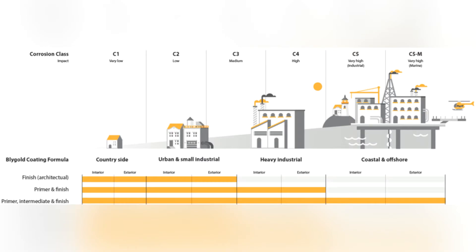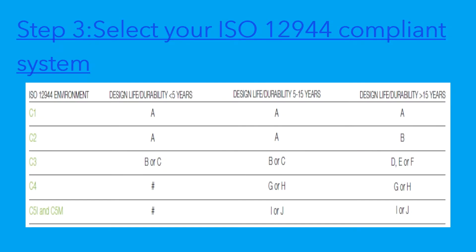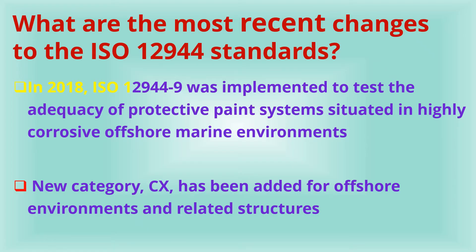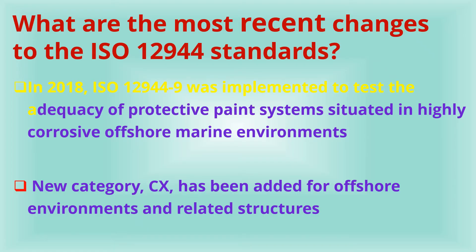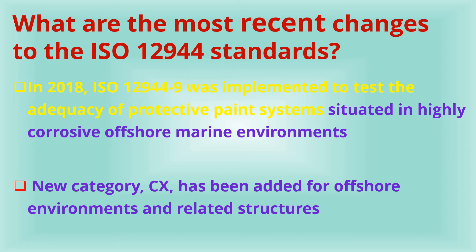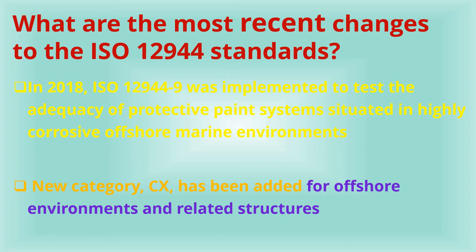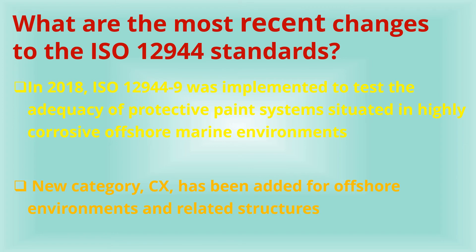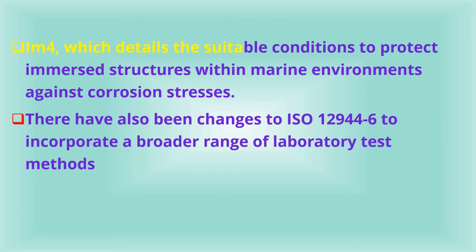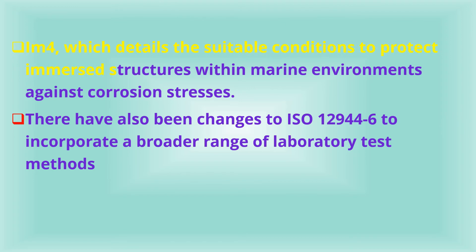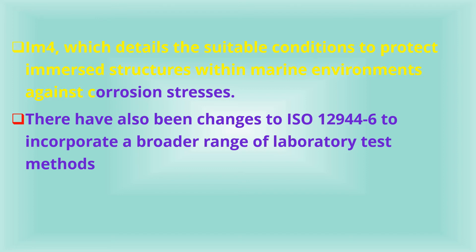Step 3: select your ISO 12944 compliant system. What are the most recent changes to the ISO 12944 standard? In 2018, ISO 12944-9 was implemented to test the adequacy of protective paint systems situated in highly corrosive offshore marine environments and related structures. Accordingly, a series of changes have been made to the corrosivity categories C1 to C5 ranging from low to high, while a new category CX has been added for offshore environments and related structures. A durability classification of 25-plus years was also developed.